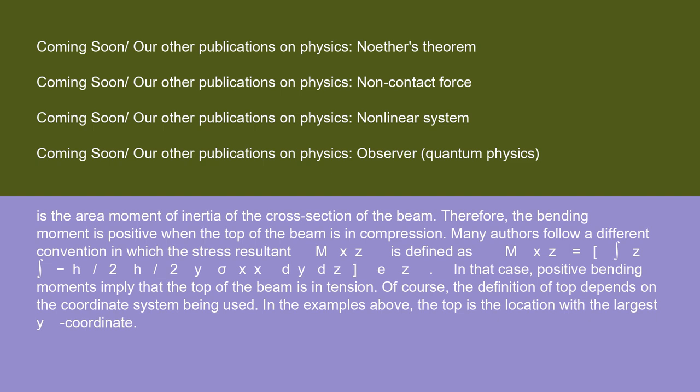Many authors follow a different convention in which the stress resultant Mxz is defined as Mxz = ∫z ∫-h/2^h/2 y·σxx dy dz. In that case, positive bending moments imply that the top of the beam is in tension. Of course, the definition of top depends on the coordinate system being used. In the examples above, the top is the location with the largest y coordinate.